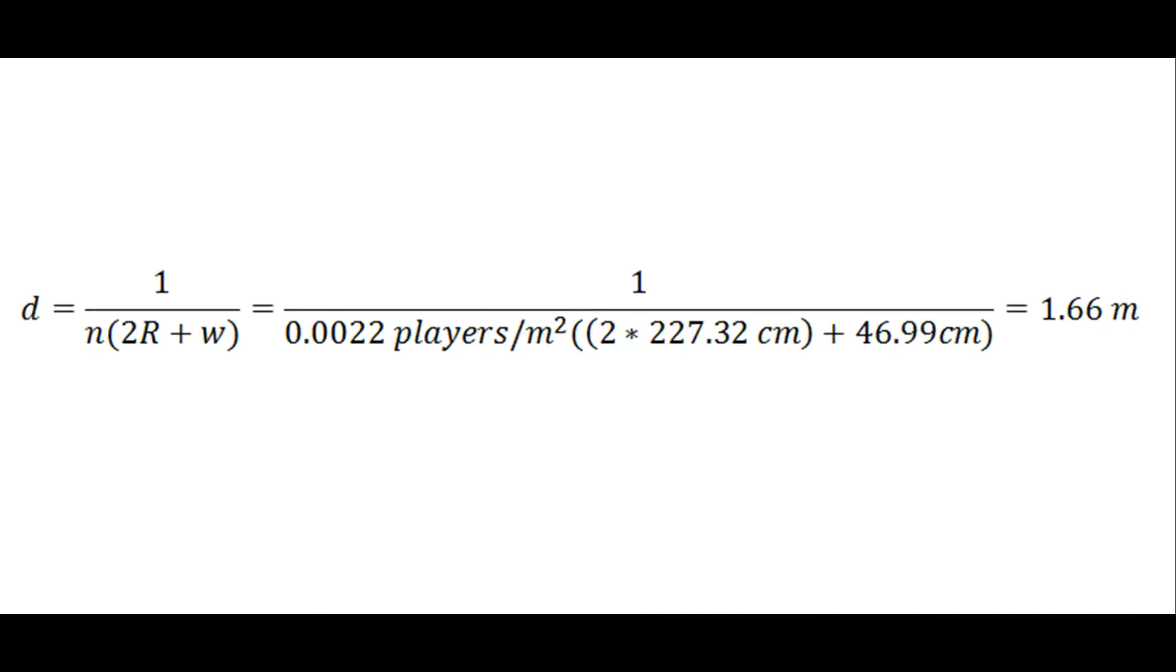In order to figure out how far one can travel before being tackled, we use the equation 1 divided by N times (2R plus W), where N is the amount of defensive players per square meter, R is the distance defenders can dive, and W is the offensive player's width. Using the numbers we had in our previous example, we find that Taylor can travel an average of 1.66 meters before being tackled.